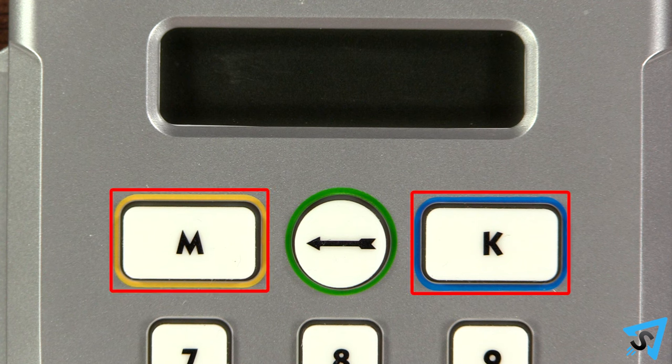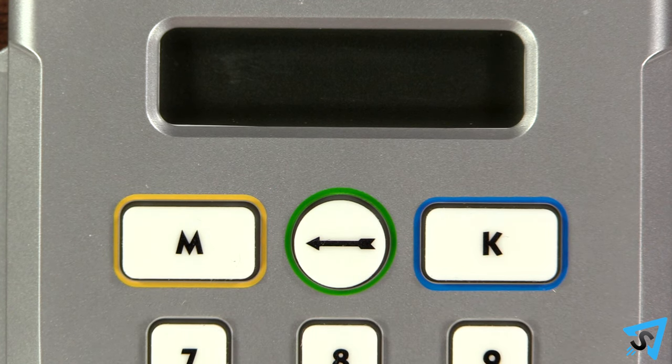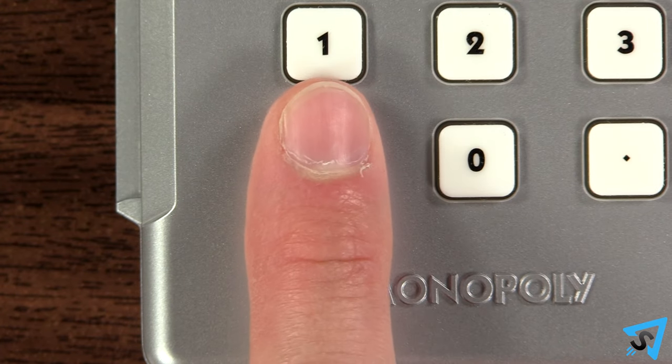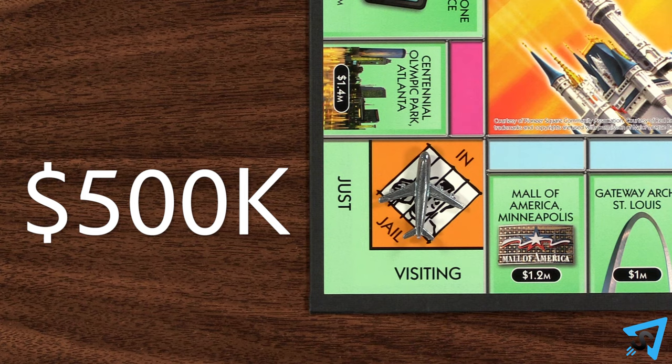Money increments in thousands and millions, indicated by K or M respectively. When typing in money, you must include the proper increment after the numbers to enter it. Press C to delete a mistake and re-enter it. The price to get out of jail is $500,000.